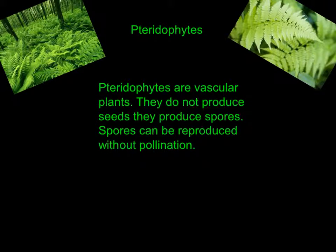Pteridophytes are vascular plants, but they do not produce seeds. They produce spores. Spores can be reproduced without pollination. An example of a Pteridophyte is a fern.